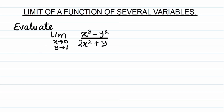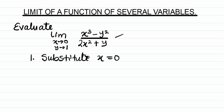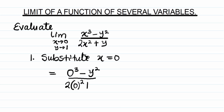The first step is very simple — substitute. Substitute x as being equal to 0 into this given function. So if you do that, we'll get: x cubed becomes 0 cubed, minus y squared, all over 2 times x squared — x becomes 0 — squared, plus y.